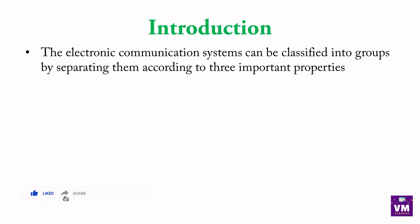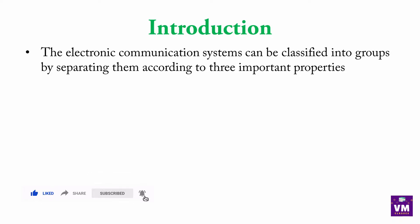The electronic communication system can be classified into groups by separating them according to three important properties. Communication system ke bahut saare types hote hai, but hume kahi na kahi usko group karna padega. Isliye, three important properties ko choose karke yahan aapke syllabus mein different types diya hai communication system ke.